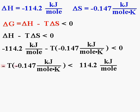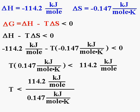Now look what I have. I have negative T times negative 0.147. Those two negatives cancel, so in the end I just have T times 0.147 kilojoules per mole K. To isolate T, all I have to do is divide by 0.147 kilojoules per mole K. That way it disappears on the left-hand side of the equation and reappears in the denominator of the right-hand side of the equation.